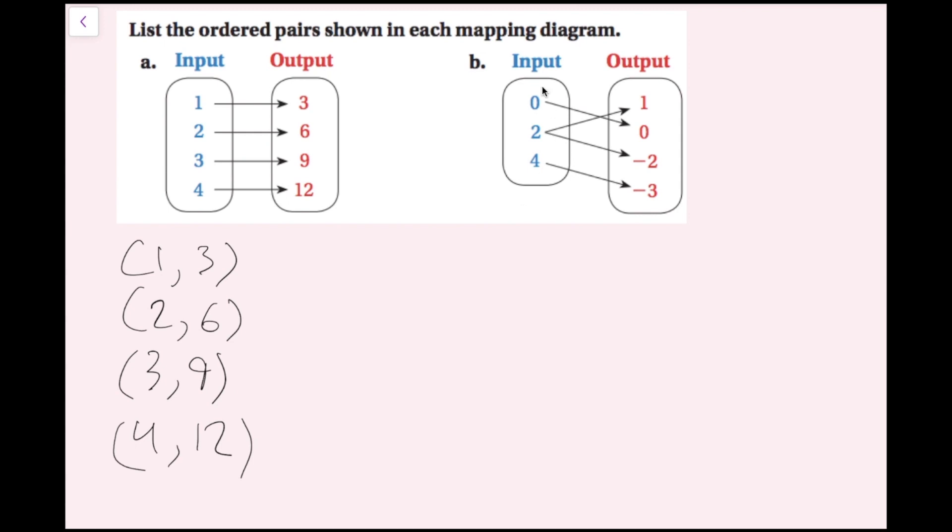For part b, I have this input, but I'm not going to match it up with this 1, I'm going to follow the arrow, and this 0 is going to go with an output of 0. So my first ordered pair is going to be 0, 0. Then I have 2, well this 2 goes to 1, and it goes to negative 2. So the 2 goes to 1, that's going to be written as 2 comma 1. Then the 2 going to negative 2, that's going to be 2 comma negative 2. And then 4 going to negative 3, so it's 4 comma negative 3. So we've written all the corresponding ordered pairs to both of these mapping diagrams, and now we're done.